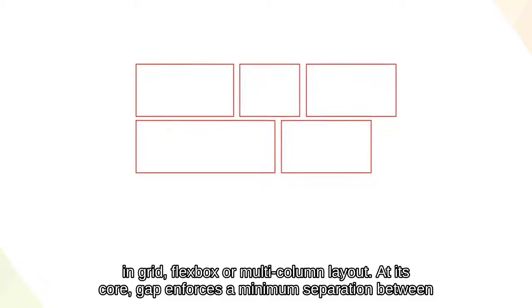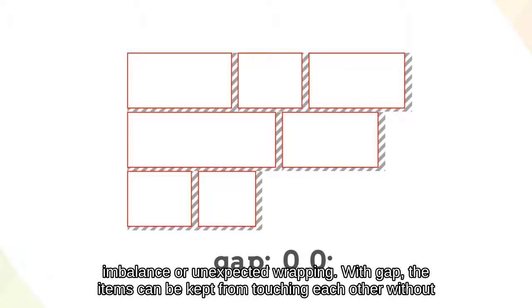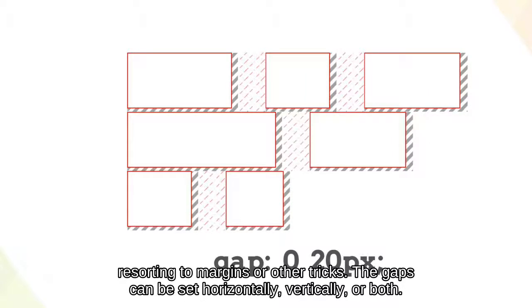At its core, Gap enforces a minimum separation between elements. In most flexbox layouts, items are pushed apart with margins, but that can lead to visual imbalance or unexpected wrapping. With Gap, the items can be kept from touching each other without resorting to margins or other tricks.